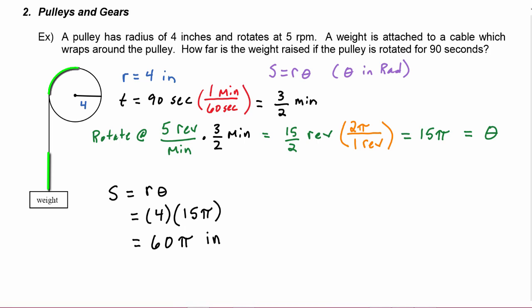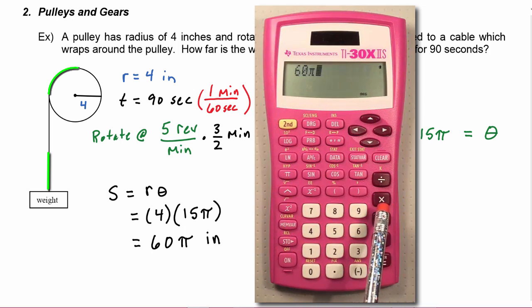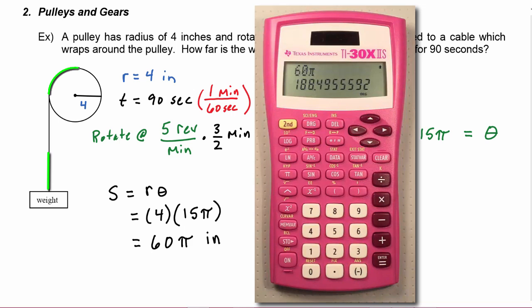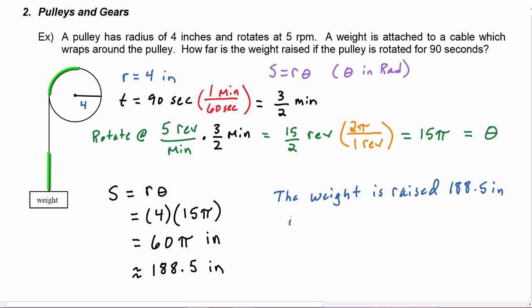Now we would probably want to approximate this with a decimal value, so let's go to our calculators and take 60 times pi. On your calculator you can enter 60 pi or 60 times pi and hit enter. Rounding to the tenths place, this would be approximately 188.5 inches. Now because this was a word problem we should write a sentence as our answer: the weight is raised 188.5 inches in 90 seconds.